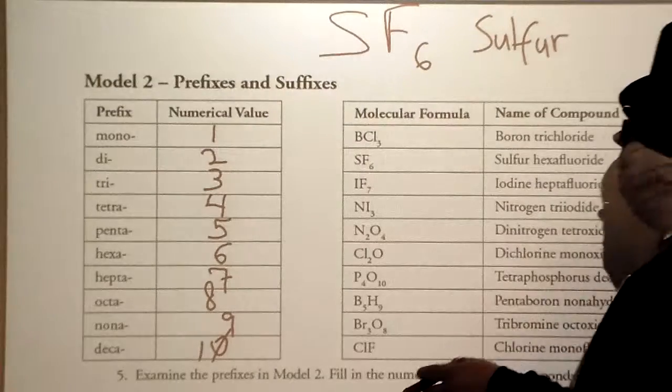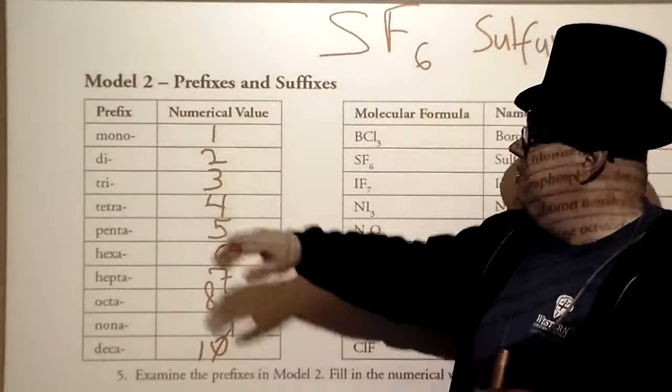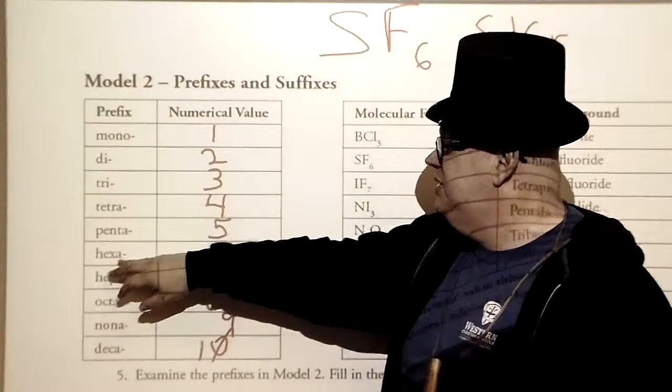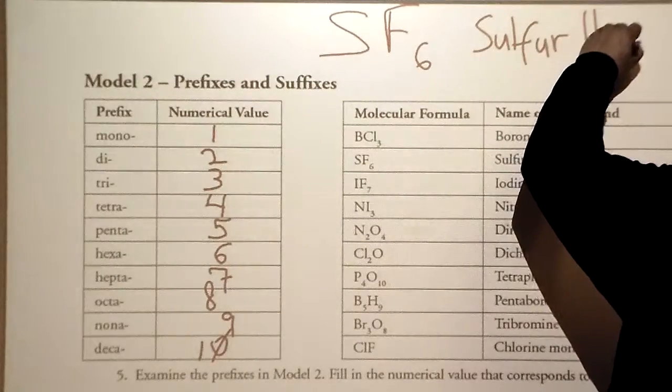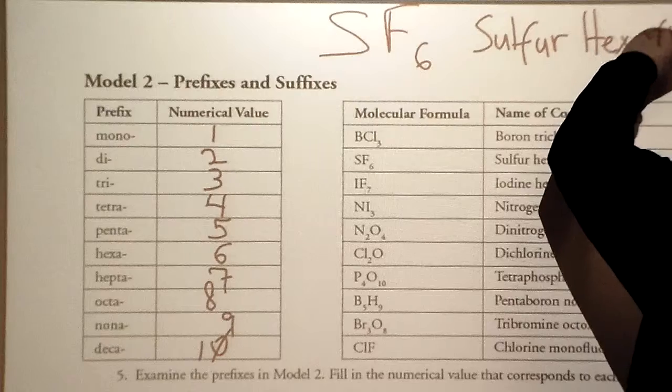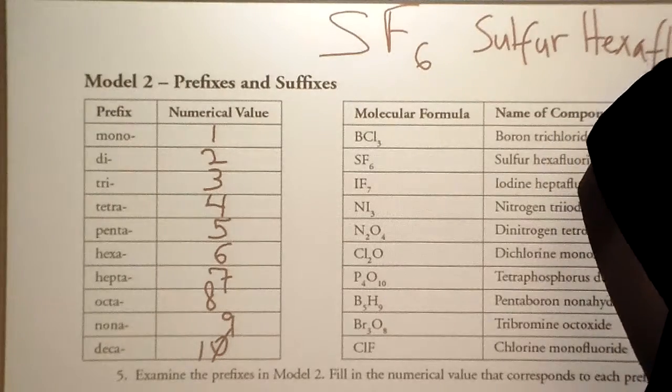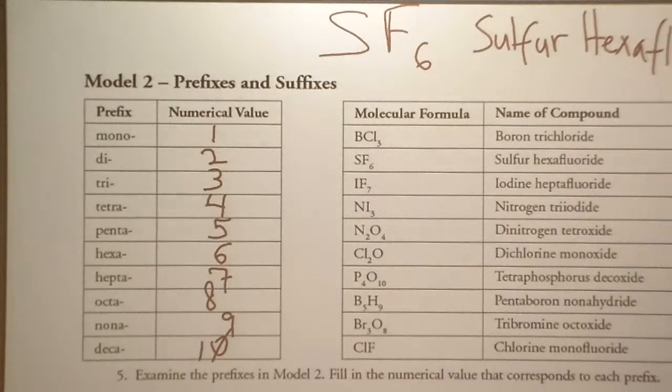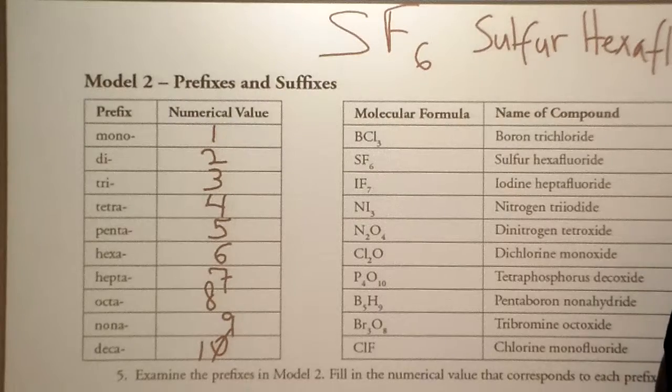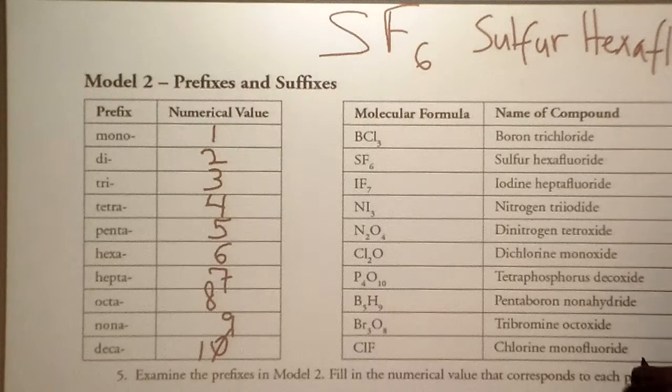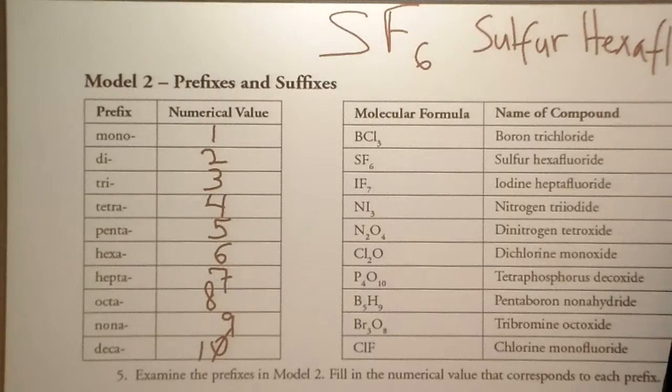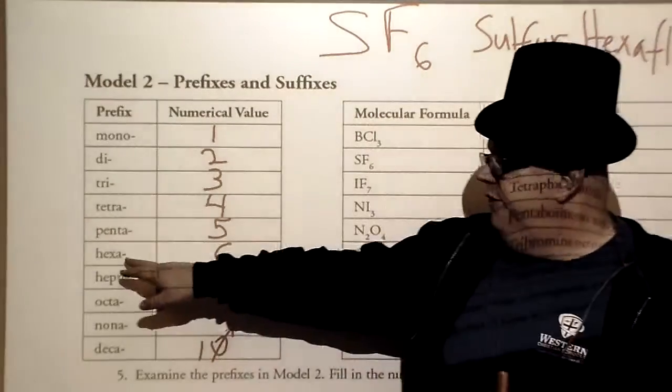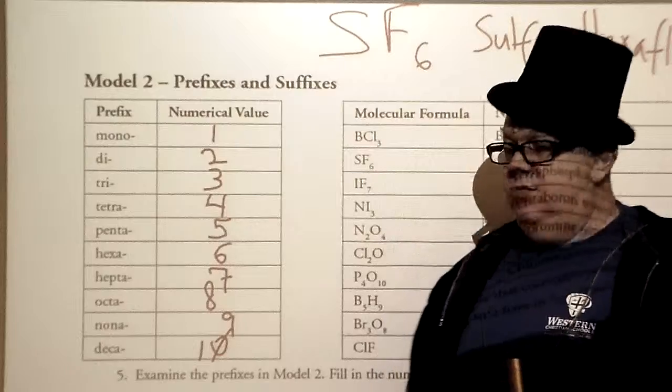Now, notice we've got six of these atoms here. Are they fluorines? Well, no, because they picked up an electron, they become fluorides. So it's sulfur fluoride, but we've got six of these. So that's when we look at our prefix, and we see, ah, hexa. So sulfur hexafluoride. So this is another example. Sulfur's a nonmetal, fluoride's a nonmetal. There's six fluorides, so it's hexa, because that's the prefix for six.